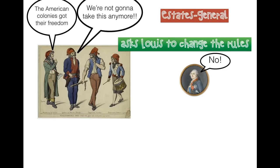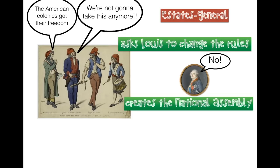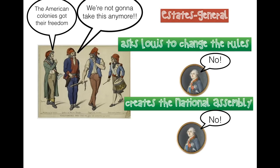The first and second estates have been standing on top of the third estate, crushing them for years and years. But now the third estate has an opportunity to do something about it because of the Estates General, and because of Enlightenment ideas, they're going to be inspired to act. The members of the third estate basically say, we're not going to take this anymore. They know about the American colonies getting their freedom, so they ask the king to change the rules — can you please make it a little bit more fair? We're 98% of the population but we only have one vote. Of course, Louis says no. So then the third estate says, we're just going to create our own government and call ourselves the National Assembly. Louis says no, you're not going to do that.